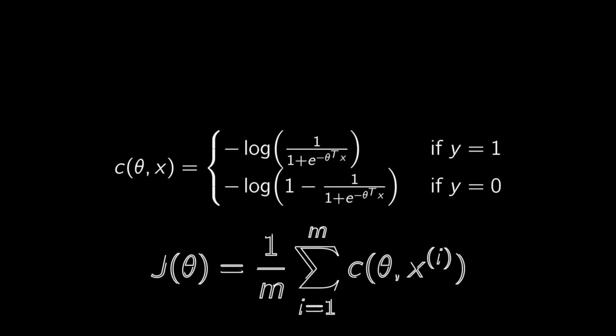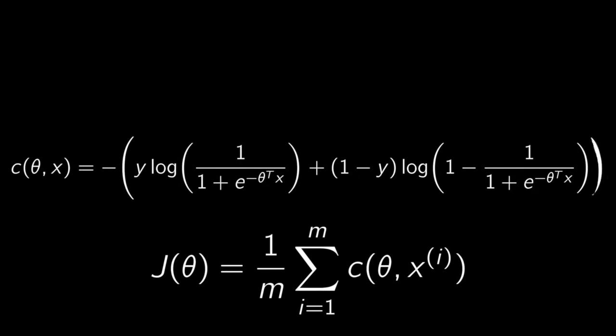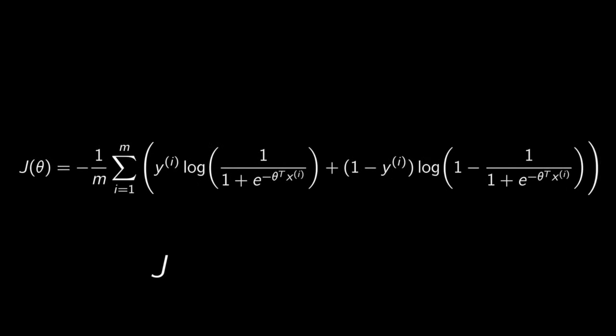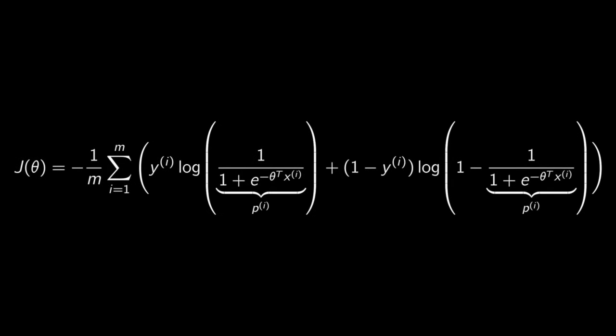The cost function over the whole training set is simply the average cost over all training instances. It can be written in a single expression, as you can verify easily. So we just sum the log losses: when y is 1, we get log p, and when y is 0, we get log(1 minus p).